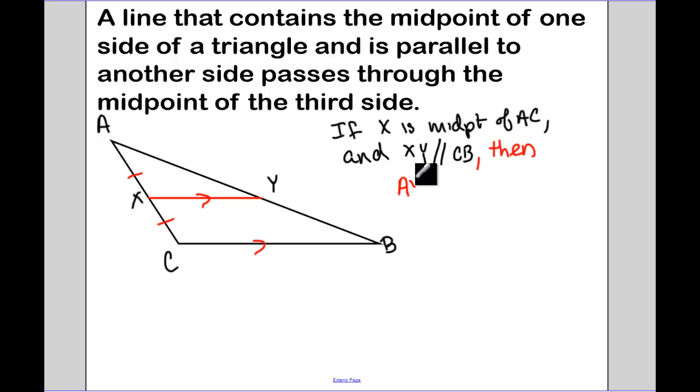Then it goes to the midpoint of the other side. So therefore, then, AY is equal to YB. And if you think about it, the last theorem helps prove this. I can draw a line through A parallel to XY and CB. I have this line, XY, intersects and breaks off congruent segments, AX and XC. Therefore, AY and YB are also going to be equal.